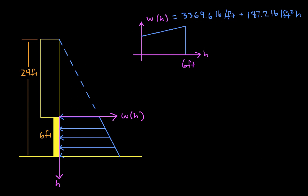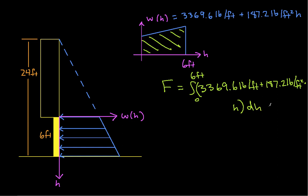So all we have to do now is work some integrals. So the magnitude of F is the area under this function. And that will be the integral from 0 to 6 feet of 3,369.6 pounds per foot, plus 187.2 pounds per square foot times H, and the whole thing is DH.